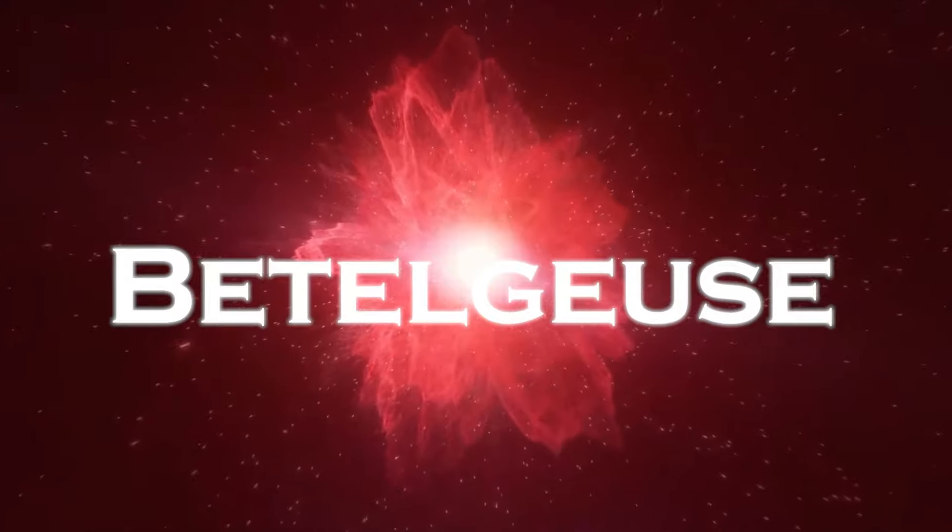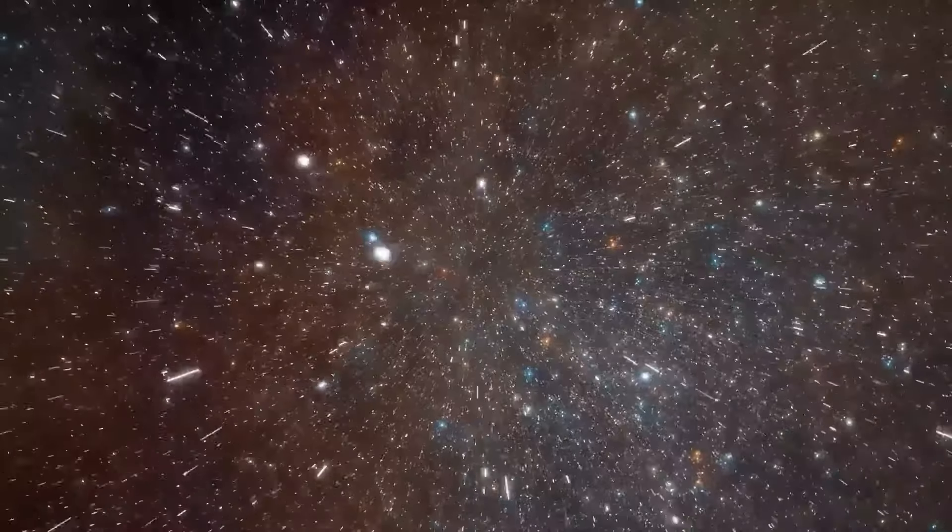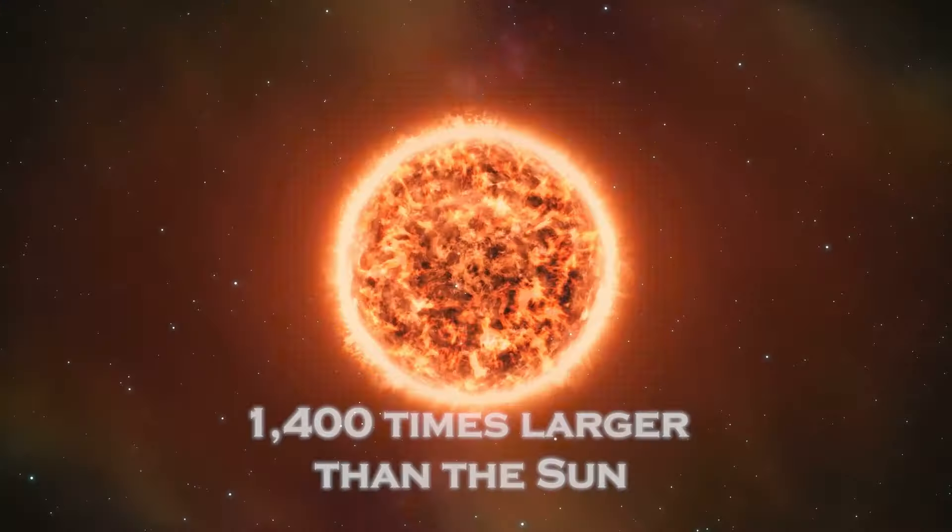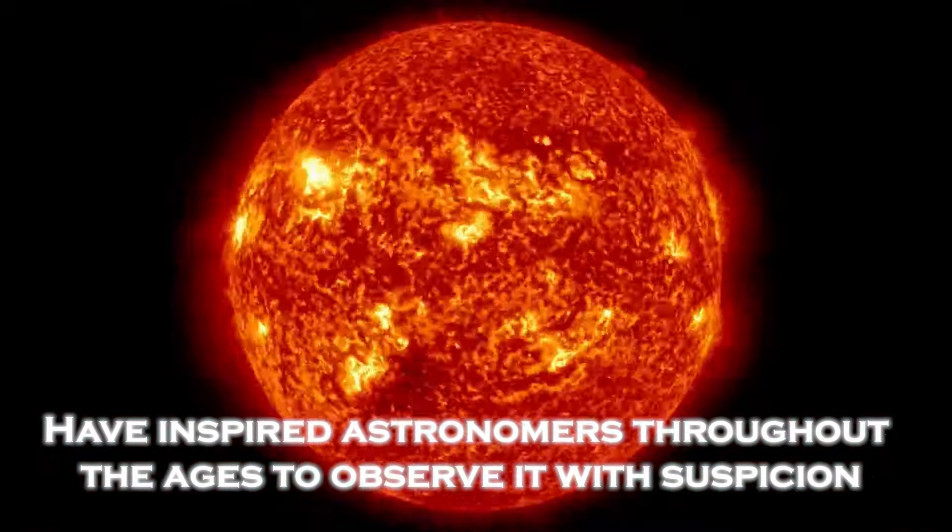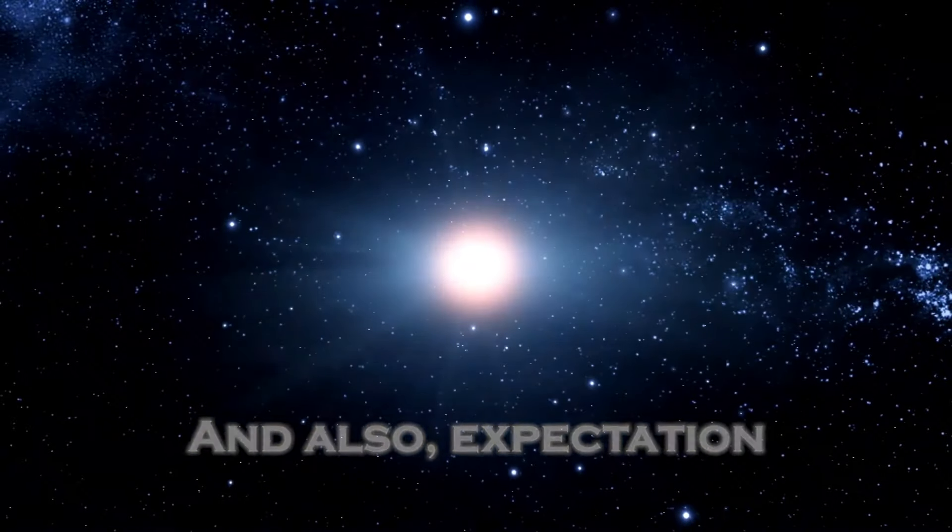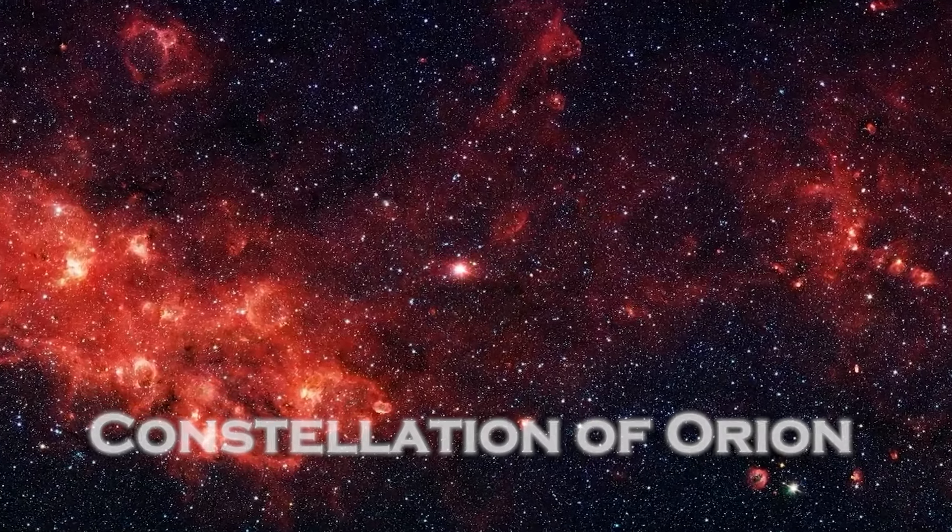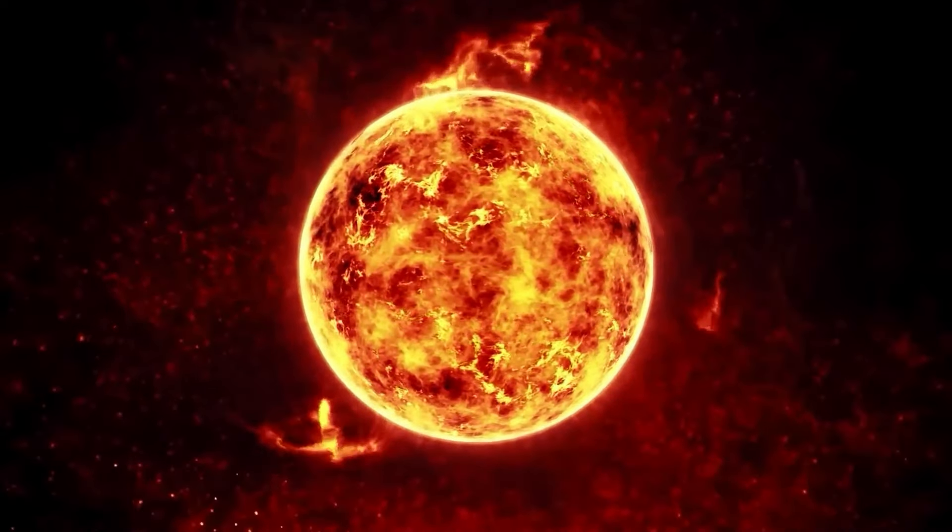Betelgeuse, one of the most enigmatic and gigantic stars in the firmament, has always fascinated scientists and observers. Its intense brightness and size, 1,400 times larger than the Sun, have inspired astronomers throughout the ages to observe it with suspicion and expectation. The massive red star is a supergiant in the constellation Orion, but in recent years, something strange began to happen. Betelgeuse began to lose brightness, and many thought it was close to going supernova.